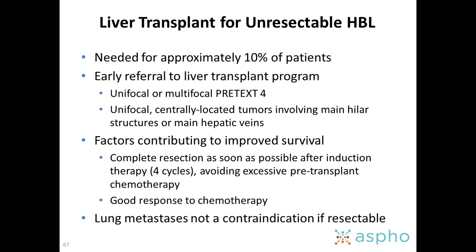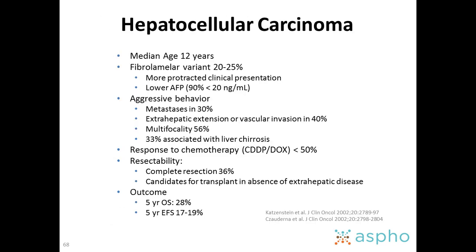Some patients might need liver transplant — approximately 10% of patients — so early referral to a liver transplant program is recommended. It's indicated for unifocal or multifocal PRETEXT 4 tumors, or centrally located tumors involving the main hilar structures or main hepatic veins. Complete resection as soon as possible and good response to chemotherapy improve survival. Lung metastases are not a contraindication for transplant if they are resectable.